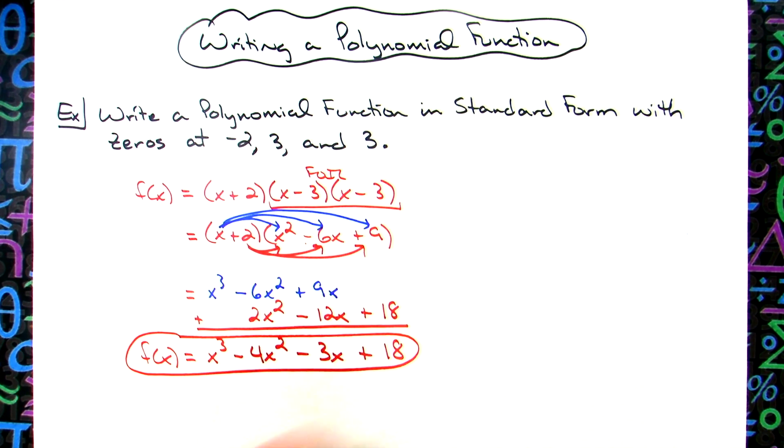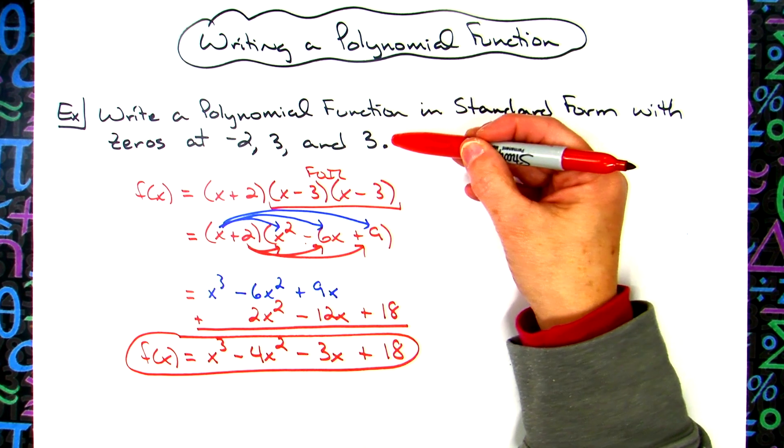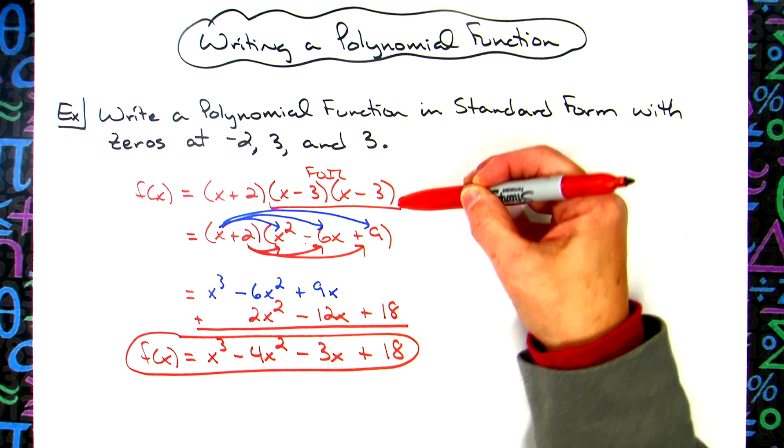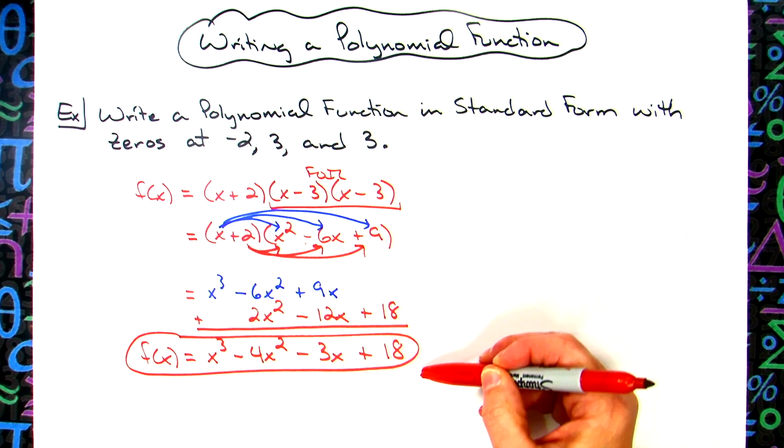So pretty much a straightforward process as long as you understand how your zeros transform into your factors. And then it's just a matter of being able to multiply that out to get your standard form.